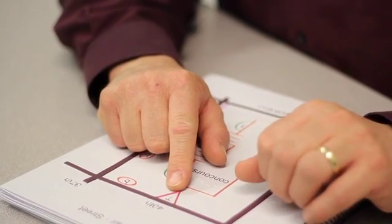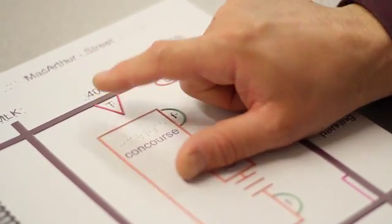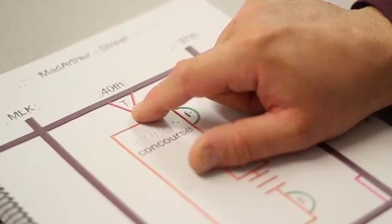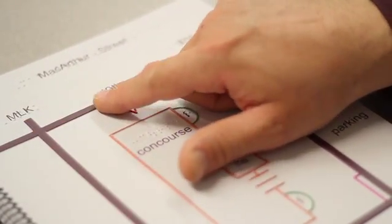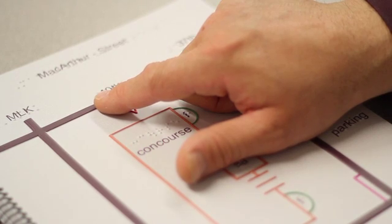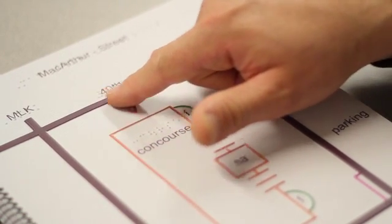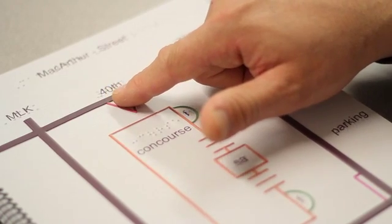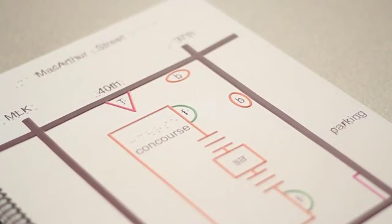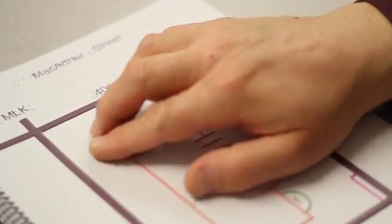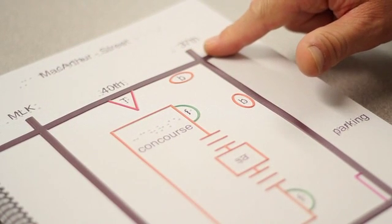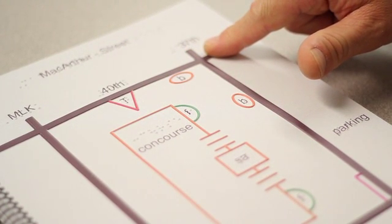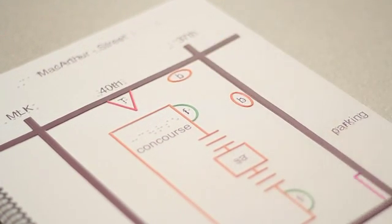Similarly, a taxi stand, which is indicated by a narrow triangle with the letter T inside it in braille and print, indicates the location where taxis pull up to pick up passengers. You can tell which street the taxi stand is on by which street the bottom part of the triangle is touching. By bottom part, I mean the narrow side of the triangle. You can tell which street a taxi stand is associated with by where it touches the street.